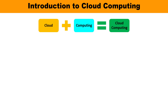Cloud computing is actually a sum of two terms: cloud plus computing. First, you need to understand what cloud means. When we talk about the term cloud, it is nothing but a metaphor used for global networks. Cloud is a kind of global network of remote servers which operate as a single ecosystem, and it is commonly associated with the internet — it is essentially a group of servers.